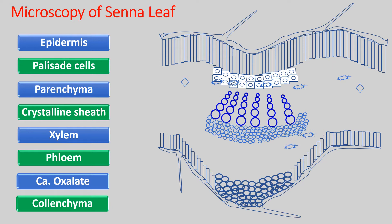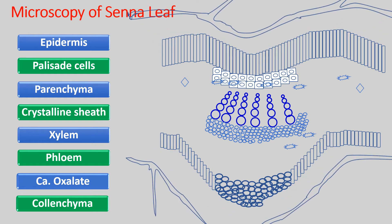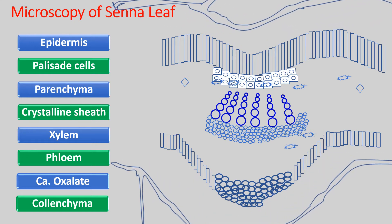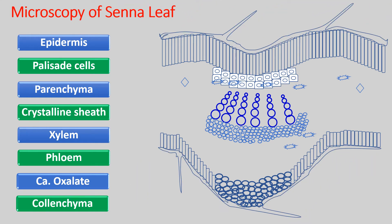The epidermis is the outermost layer on both surfaces — it has upper as well as lower epidermis. The epidermal tissue has epidermal cells, trichomes, and stomata. In transverse section, one can see tapering trichomes which are unicellular with a warty appearance. The entire epidermis is cuticularized — it has the presence of a cuticle.